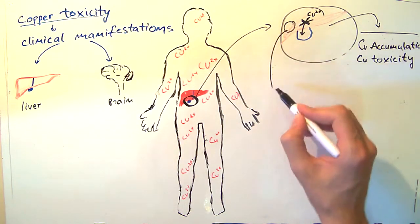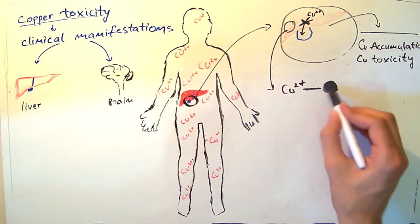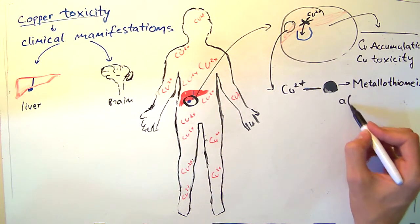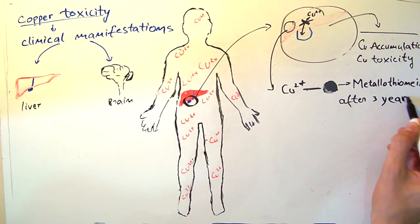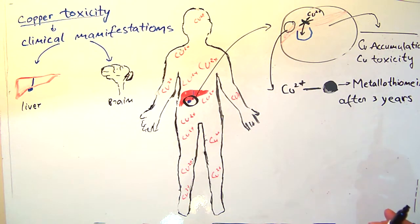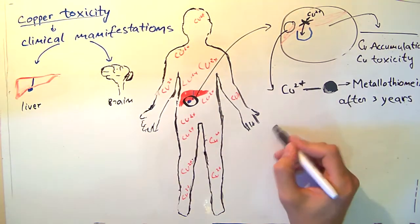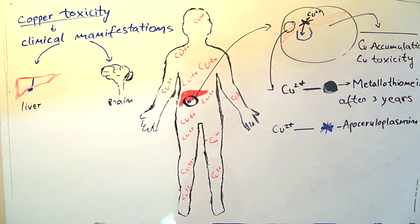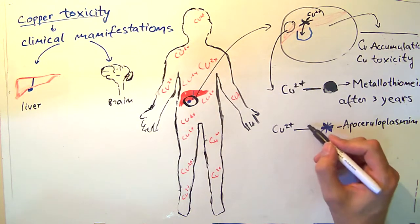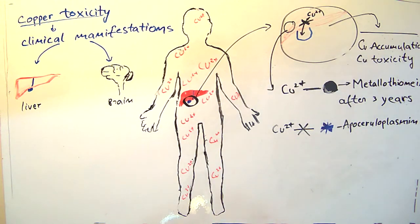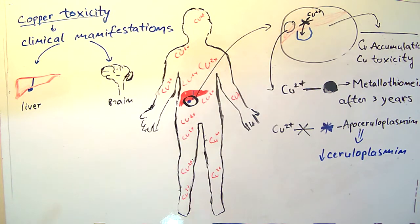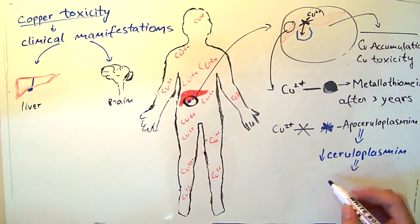If we continue to zoom in at a molecular level, there is a bond between copper and metallothionine. This black circle represents the metallothionine. The excess copper is connected to this protein and slows down the process of clinical manifestation. But as time goes by, the liver damage begins as early as three years of age. In the bloodstream, there is a defective copper incorporation with apoceruloplasmin, here represented as a blue star. So this bond between copper and apoceruloplasmin does not exist.